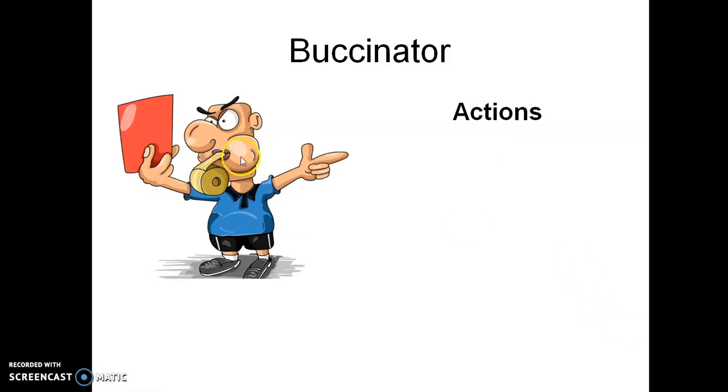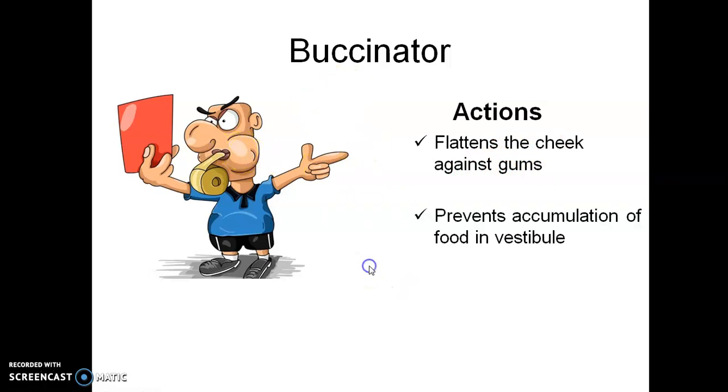Action of the buccinator - as you can see, this person is whistling. But in addition to whistling, it has got additional actions. It flattens the cheek against the gum. This cheek will plaster against the gum because of buccinator.